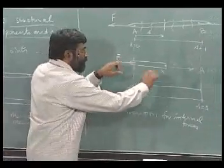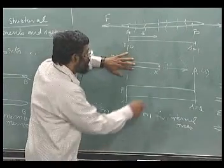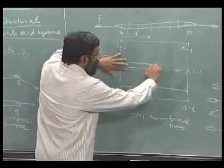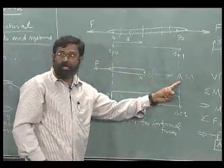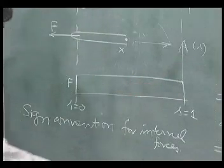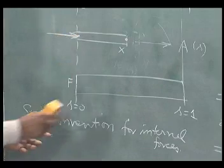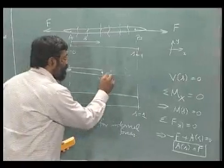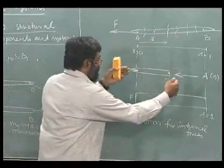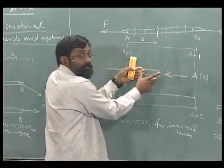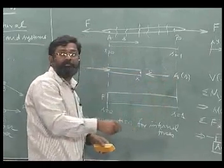In this case you notice that there is a pulling action. Simple way to understand is just hold this particular rigid body and examine what is happening here. It is being pulled and therefore we will have this as a positive value. Supposing this external force had been like this, then the internal force direction also will change to like this. In this particular case, if you hold this, this is pushing it, compressing this particular rigid body and therefore the notion of this axial force is negative.